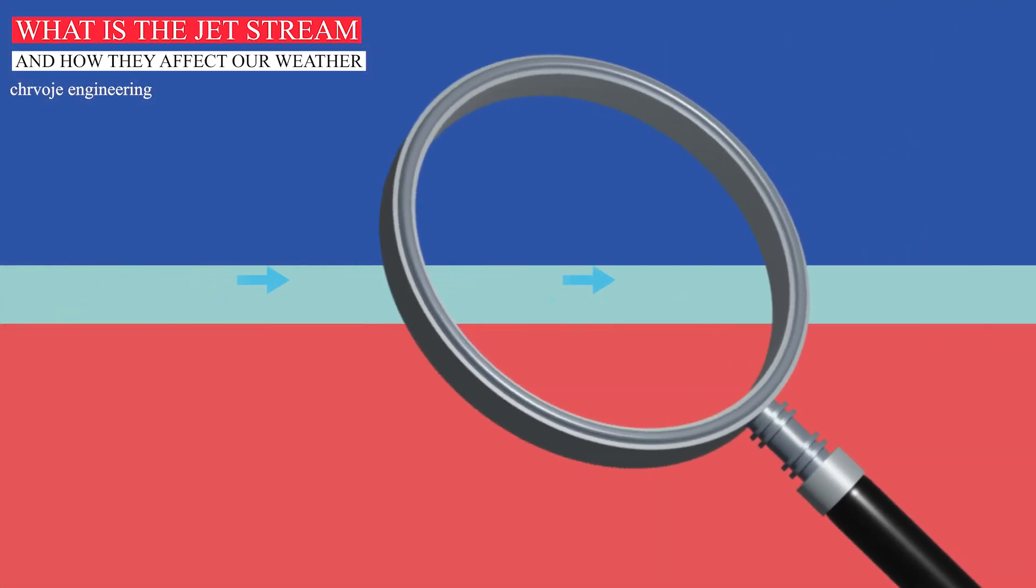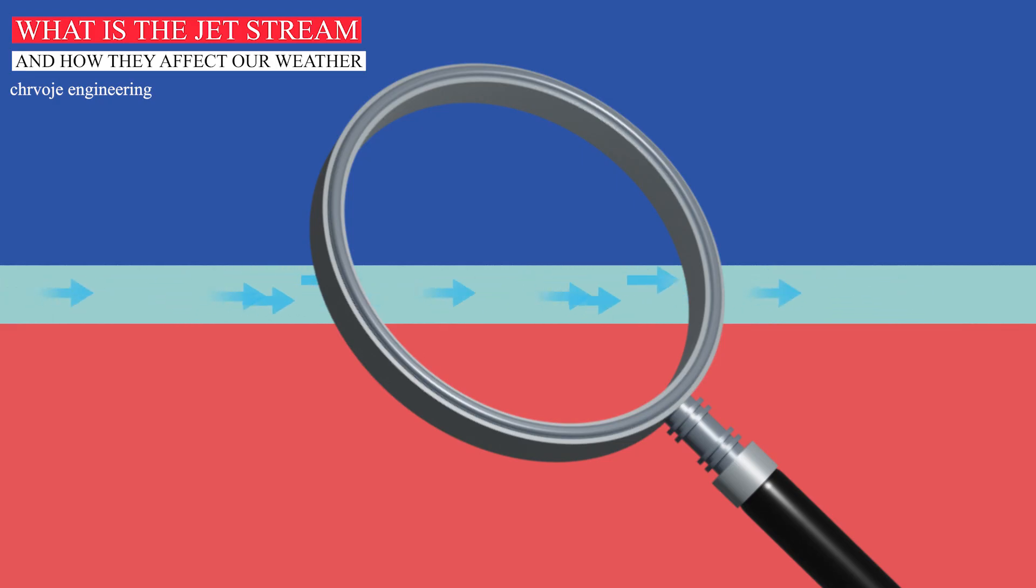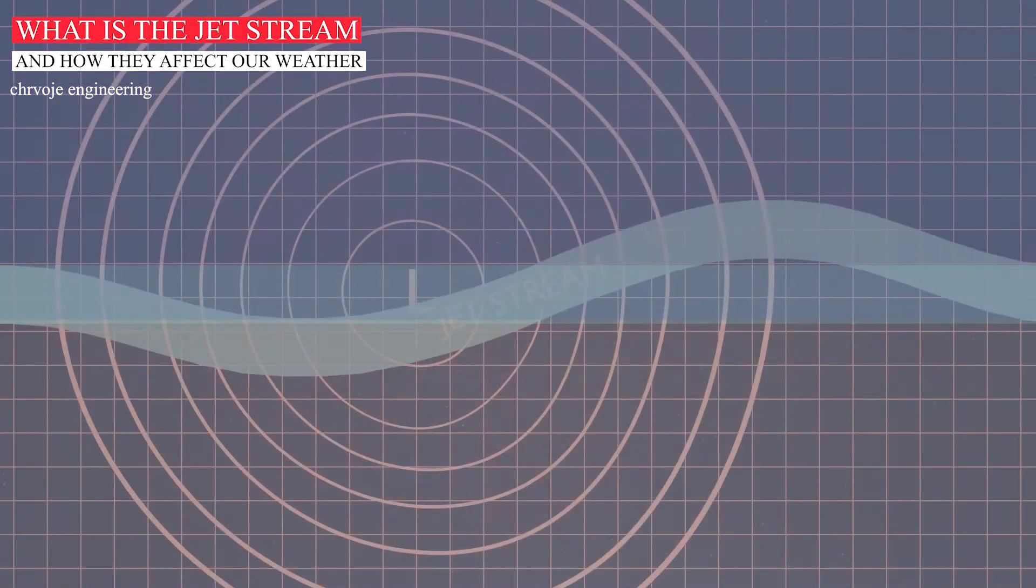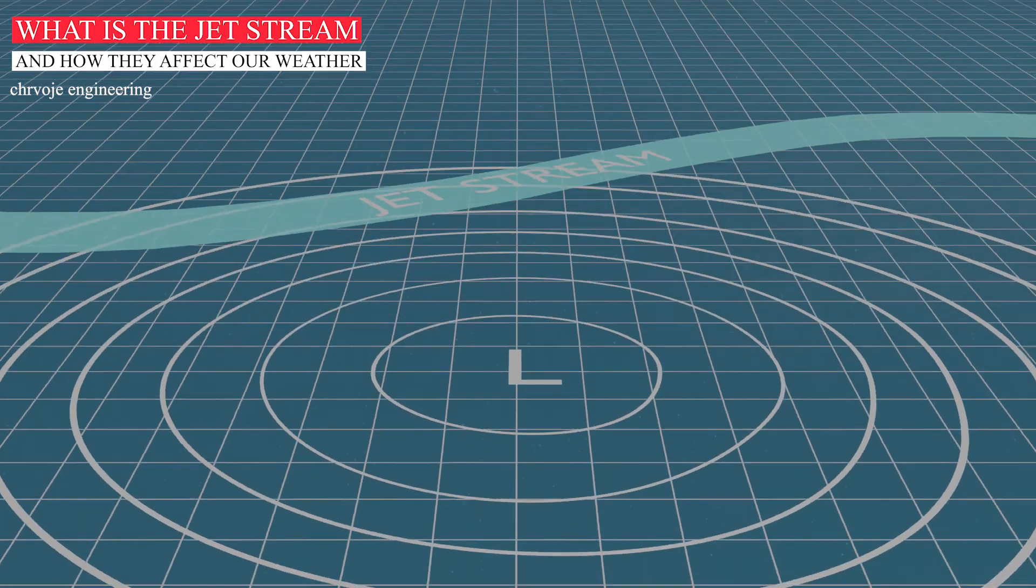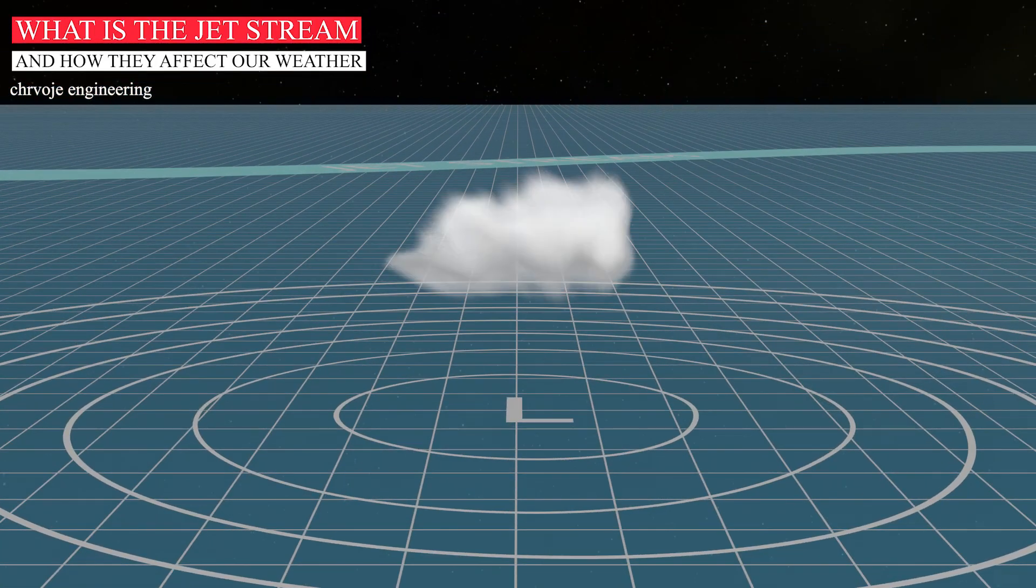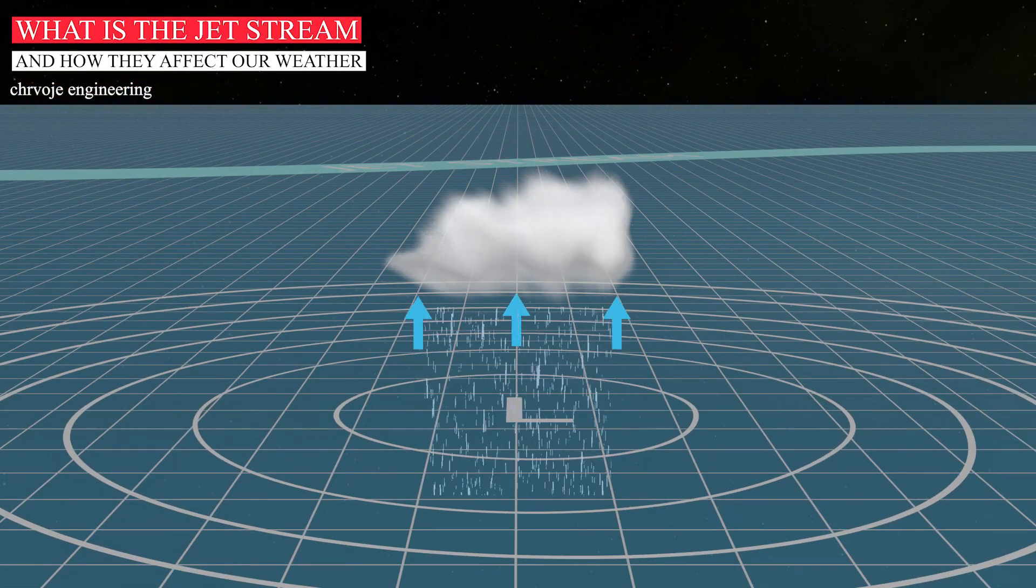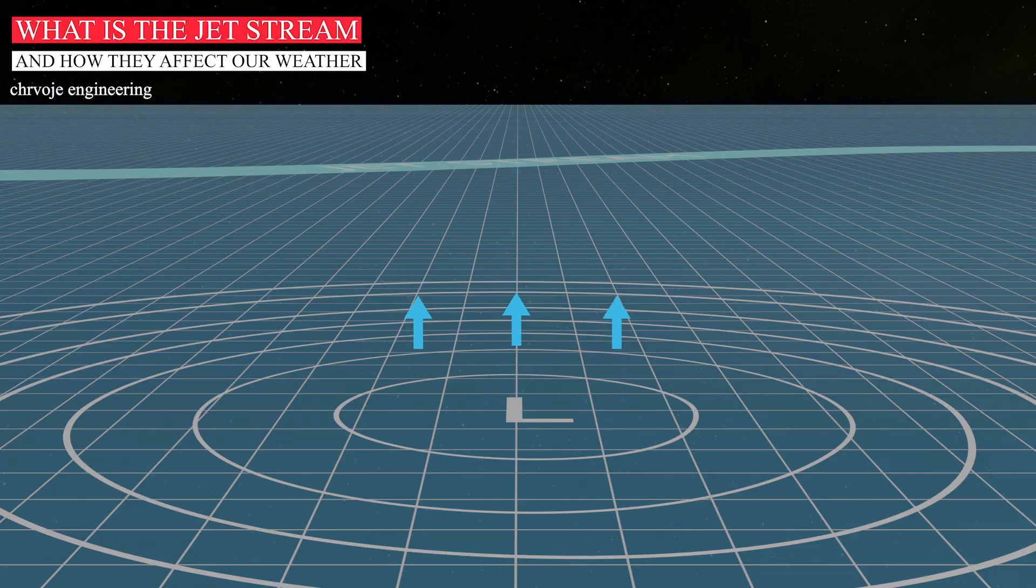Where the air is accelerating, more air is leaving than entering a certain point. This means that the air is being depleted at this point. To fill the depletion, air from below rises. When air rises, it forms clouds and precipitation. The wind at the surface converges to this rising column of air, causing surface pressure to fall and a low-pressure system to develop or deepen further.